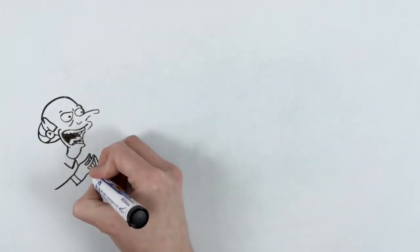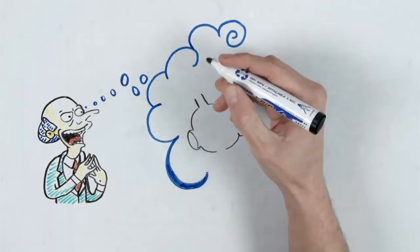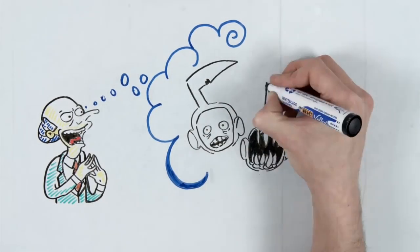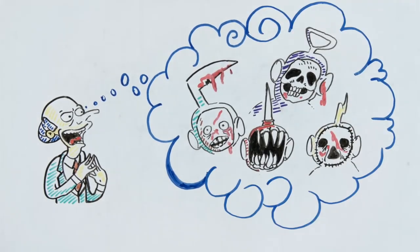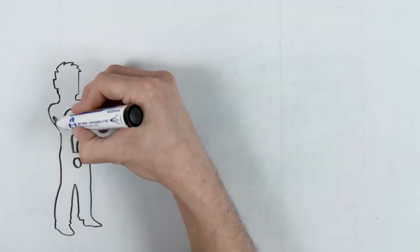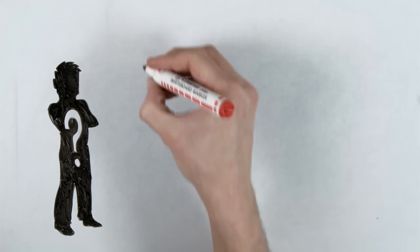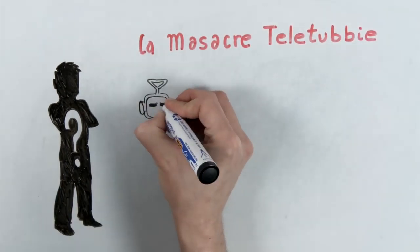However, weird people on the internet thought it was a good idea to create a creepy version of these adorable characters. The Slendytubbies first appeared after the big success of the Slenderman game. Sean Towman developed this game in 2012 and it's based on a story called The Tubby Massacre.